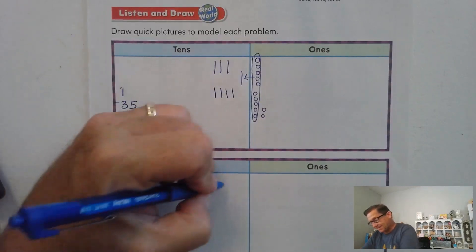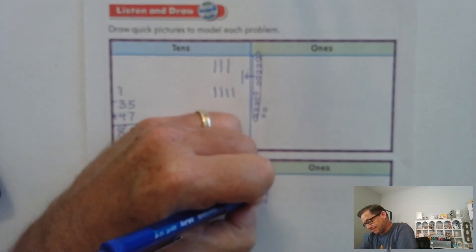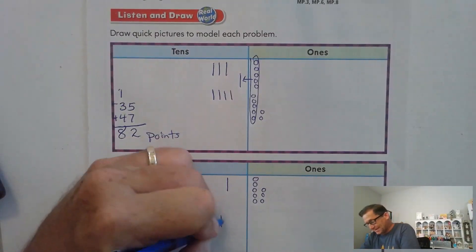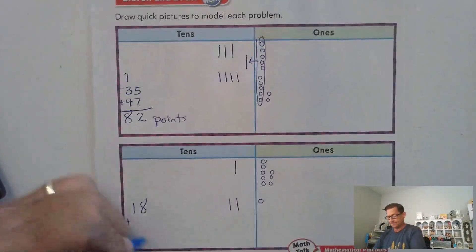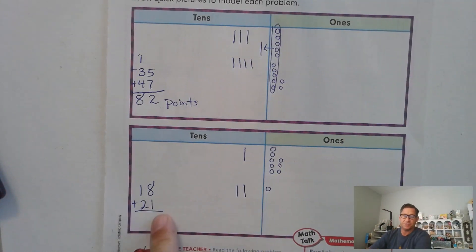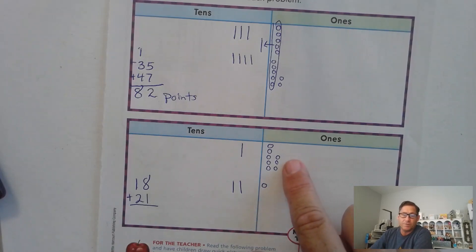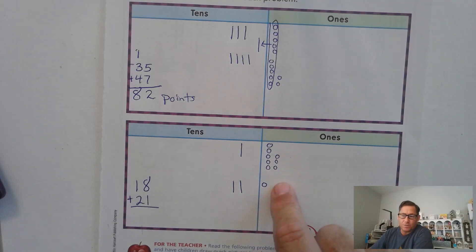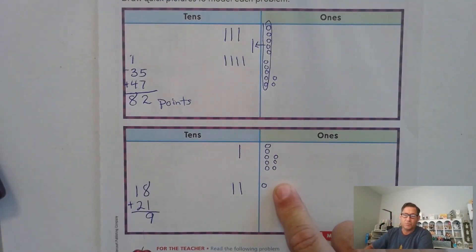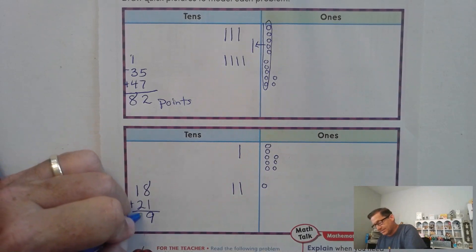Is this what you came up with for Patty? 18 plus 21. That's what it would look like as a traditional addition problem. Do we have enough ones so that we would have to regroup? We have 8 and 1 — that's just 9 ones, right? So there isn't anything to regroup. So we don't have any ones that we're going to trade. We're just going to add the 10s: 2 tens plus 1 ten is 3.